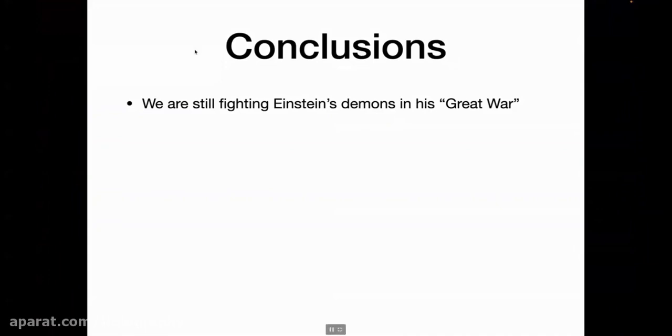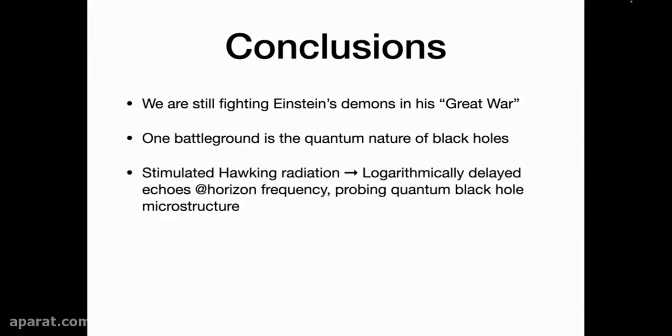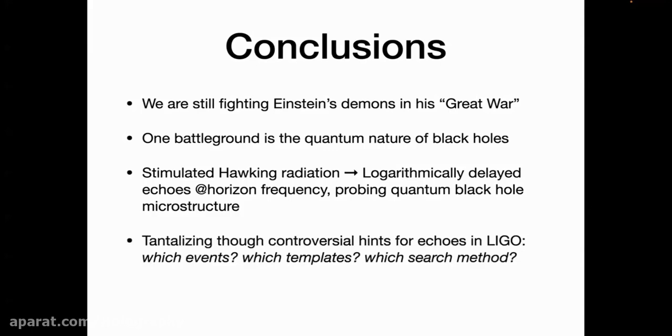Let me conclude. We are still finding Einstein's demons in this great war, the war between quantum mechanics, which he co-invented, and theory of gravity or general relativity, which he did invent on his own. One battleground is the quantum nature of black holes. Stimulated Hawking radiation leads to logarithmically delayed echoes at horizon frequency. It probes quantum black hole microstructure. If people are arguing about the nature of quantum black holes, there is an experimental way to test it. There are tantalizing, though controversial, hints for echoes in LIGO. We think we have the possible first measurement of stimulated Hawking radiation, but the signal is not at the level of detection yet.